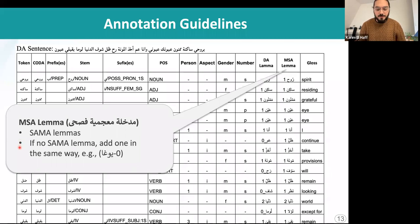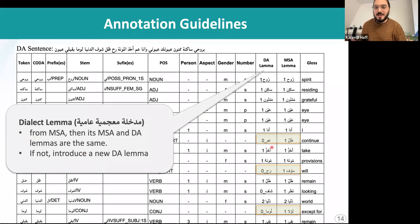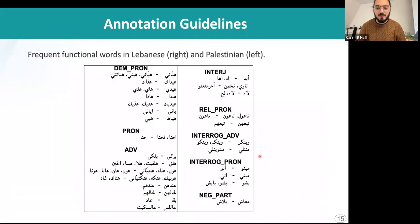If the lemma in SAMA does not exist, we wrote our own lemma and then added a zero to indicate that it is a new solution. Then we annotated the dialectal lemma. Some words in Levantine — in Lebanese or Palestinian — do not exist in standard Arabic. So we had to write a new lemma for that word exclusive to the dialect, and we put it side by side with the modern standard Arabic lemma to see the equivalences and differences, which will be an interesting feature to look at in the future.